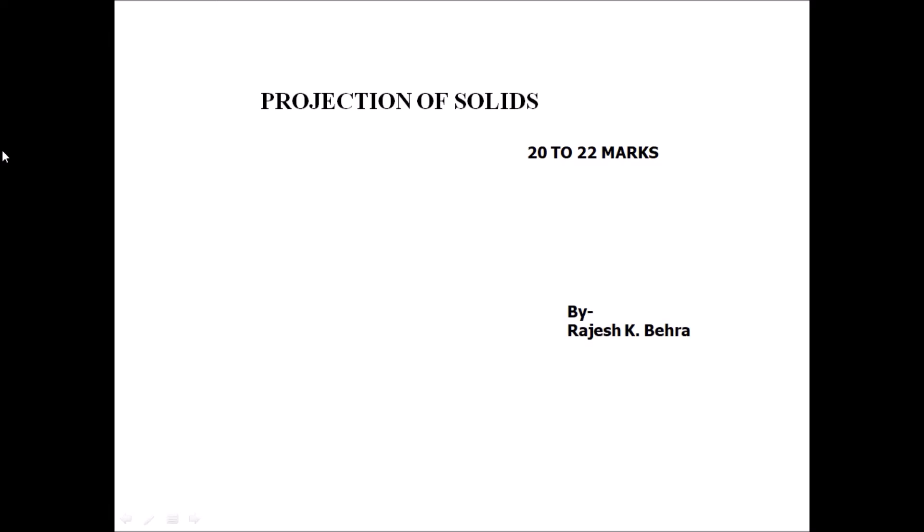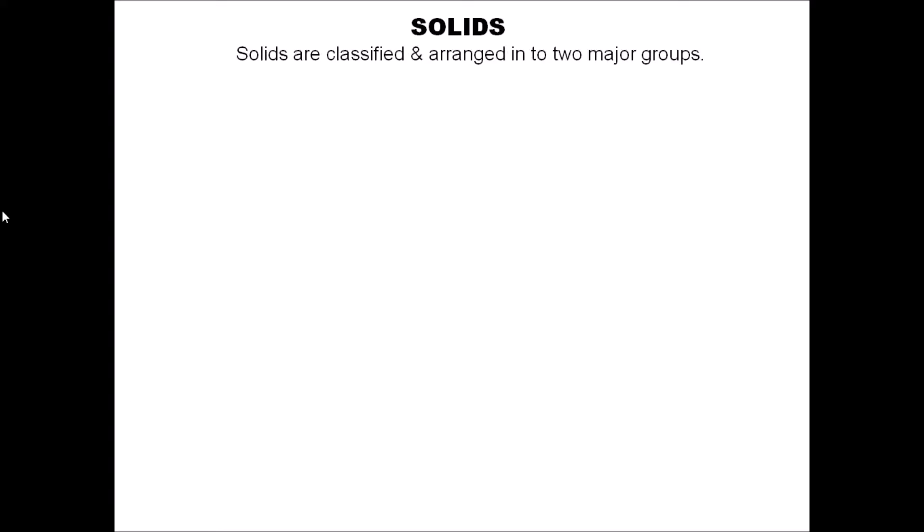Solids are basically divided into two categories and kept as Group A and Group B. In Group A, we will have those solids whose top and base shape are same.